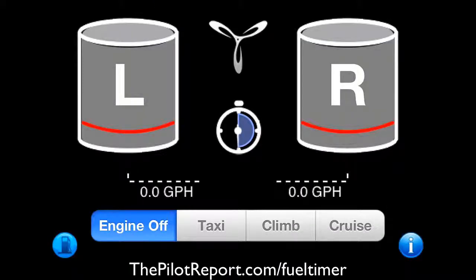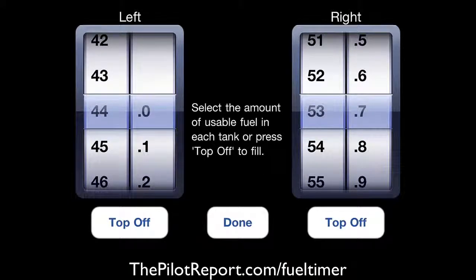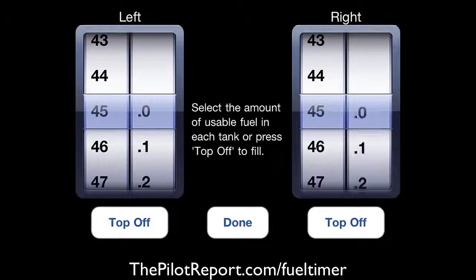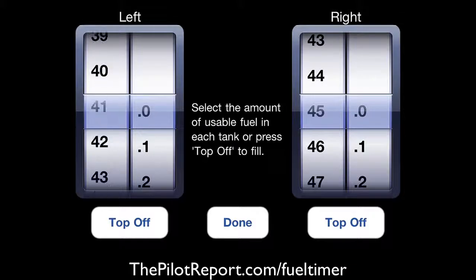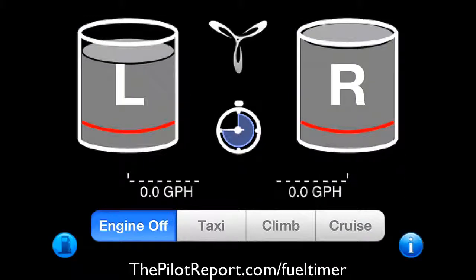Now you'll notice the main screen has very simple functions: engine off, taxi, climb, and cruise. First we need to set the fuel. On the bottom left, click on the fuel tank. Because of the passengers I have today, I'm taking 45 gallons left and 45 gallons right. When I hit the top off button, it shoots up to 54 — that's what we set in the setup phase. But for this demonstration, I'm taking 45 in each tank to get full payload. Hit done.